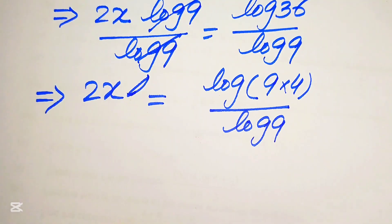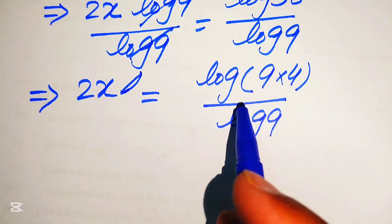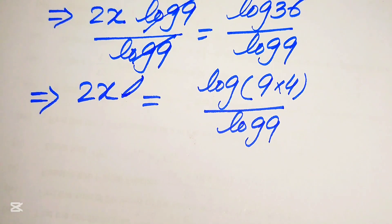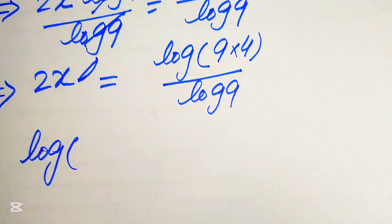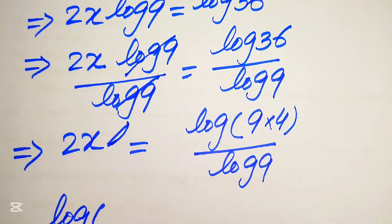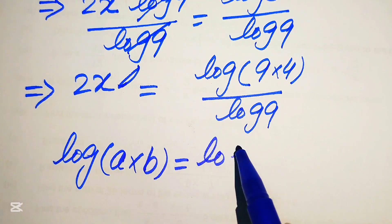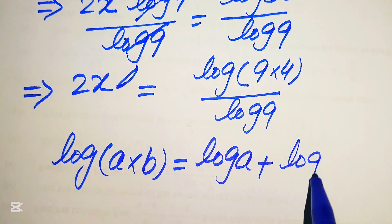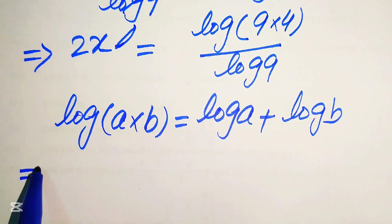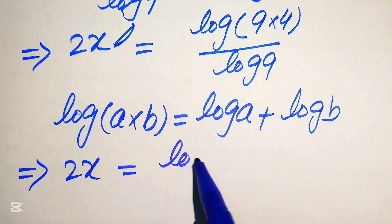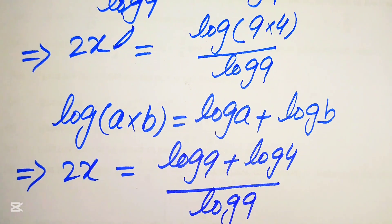In the next step we need more simplifications, and we can apply another property of logarithm. We know that if we have log of a multiplied by b, it equals log of a plus log of b. According to this property, we write the terms as 2x equals log of 9 plus log of 4, divided by log of 9.